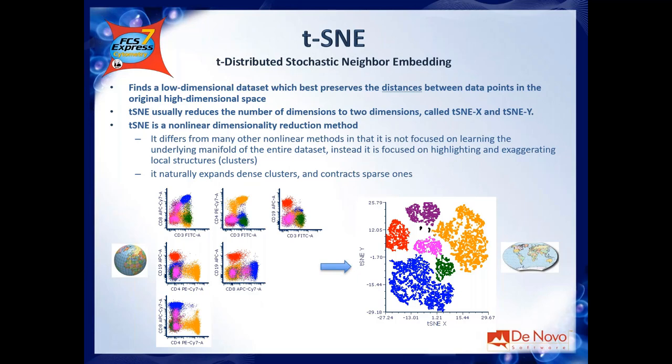What tSNE does is create a completely new dataset with only two dimensions, usually called tSNE-X and tSNE-Y, or 1 and 2. These are completely new dimensions, and the beauty is that what you see in the tSNE plot — the tSNE map — is a representation of the original dataset, exactly as a 2D map of the world is a representation of our planet.